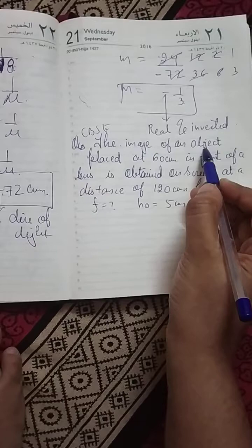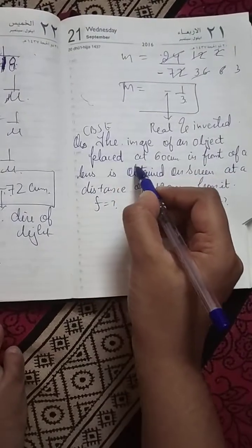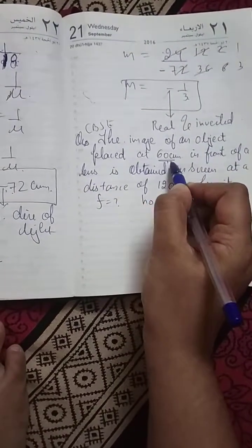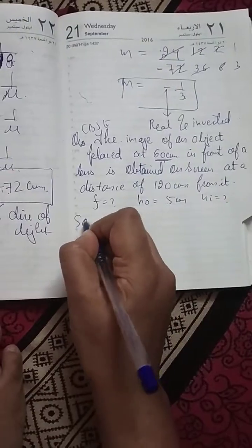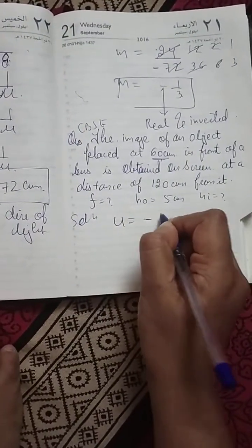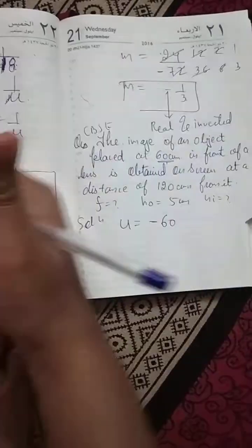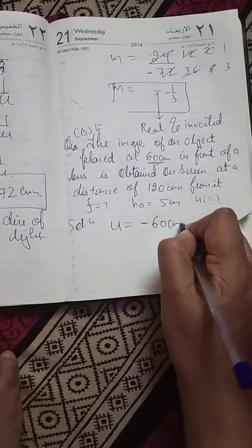The image of an object which is placed at 60 cm. So what is the 60? U is equal to 60 and since always negative because it is opposite to the direction of the light.